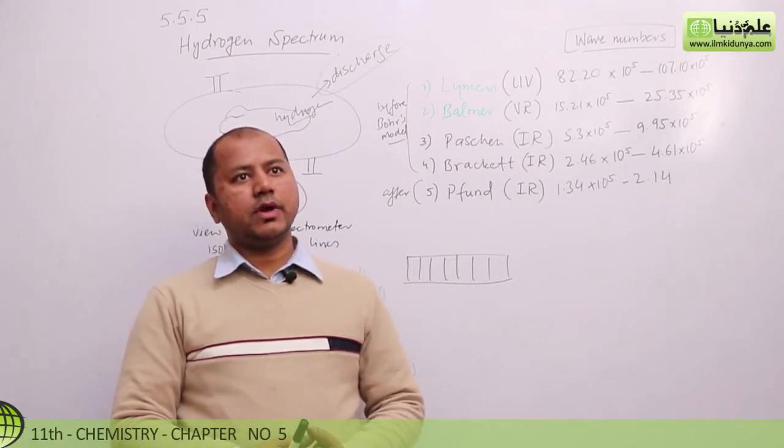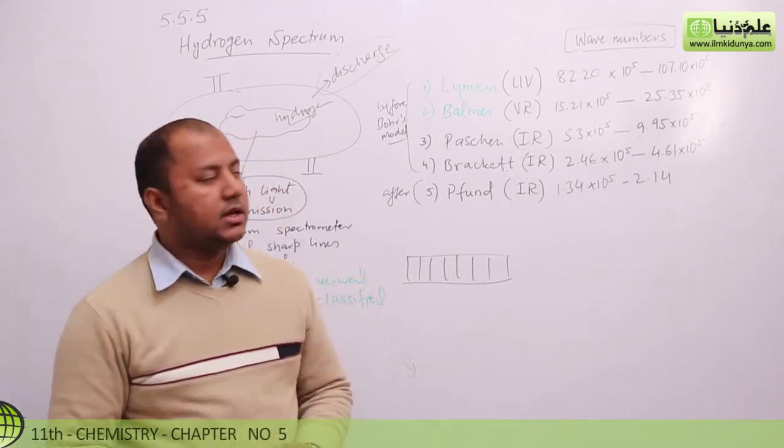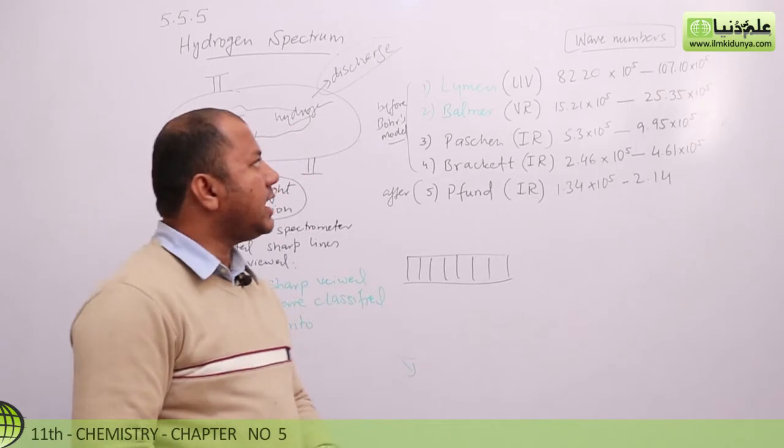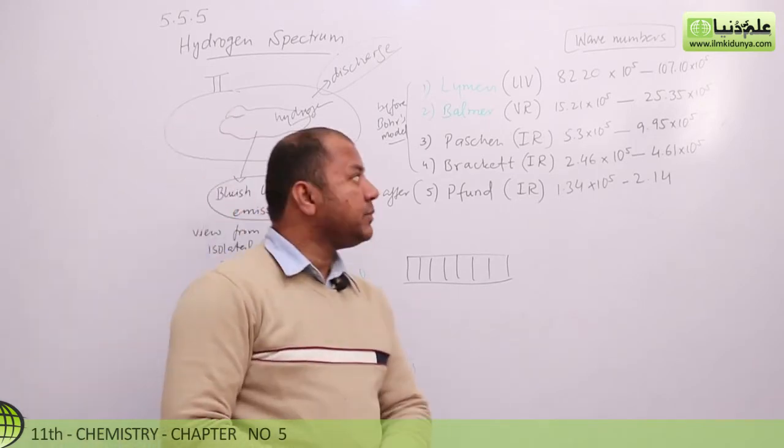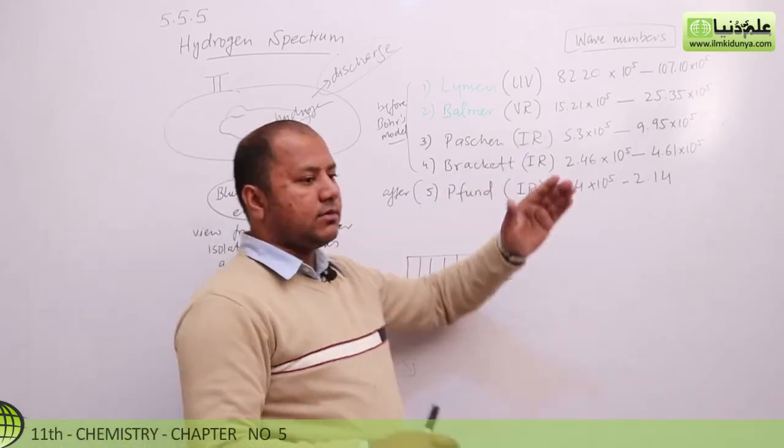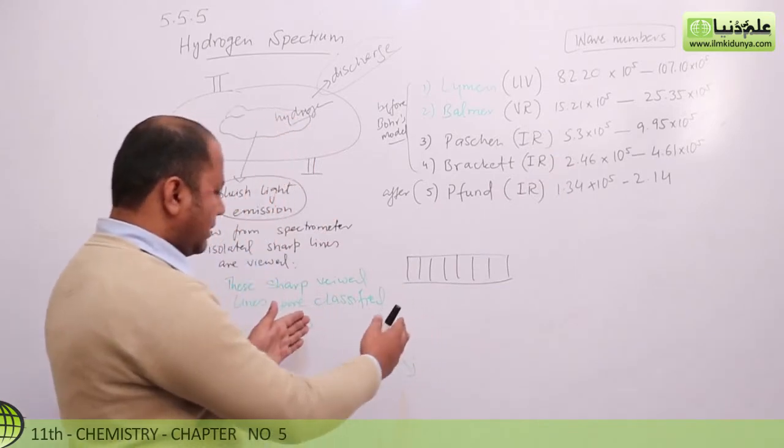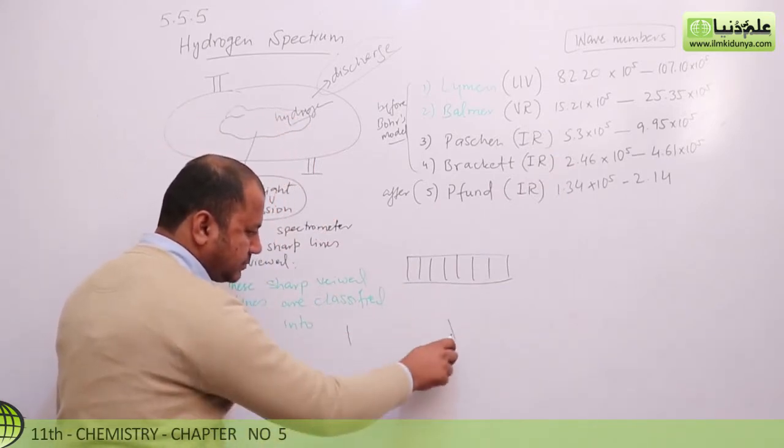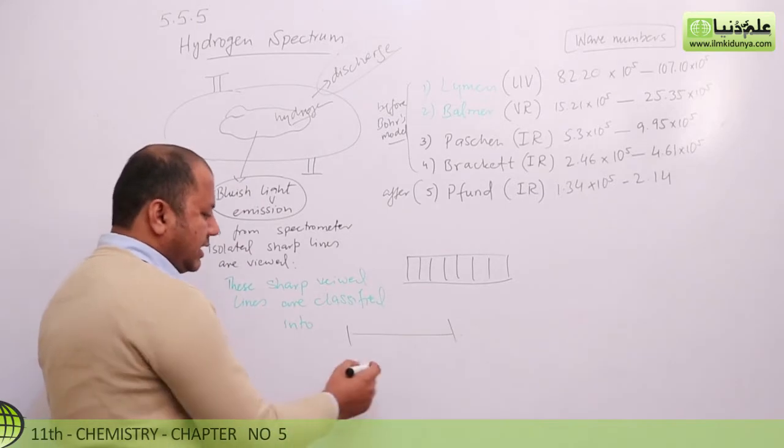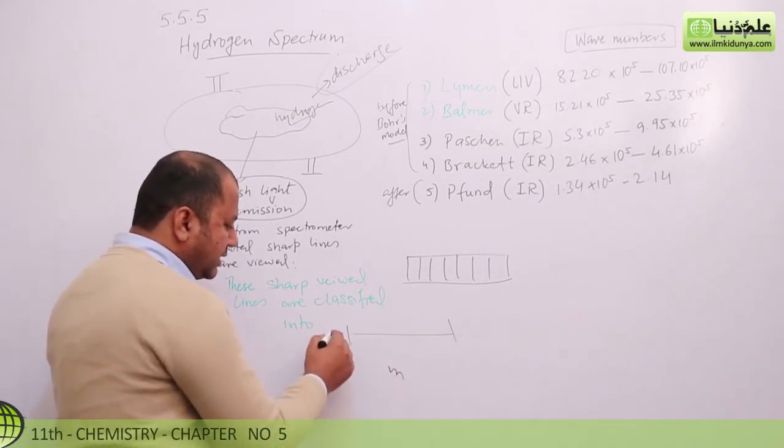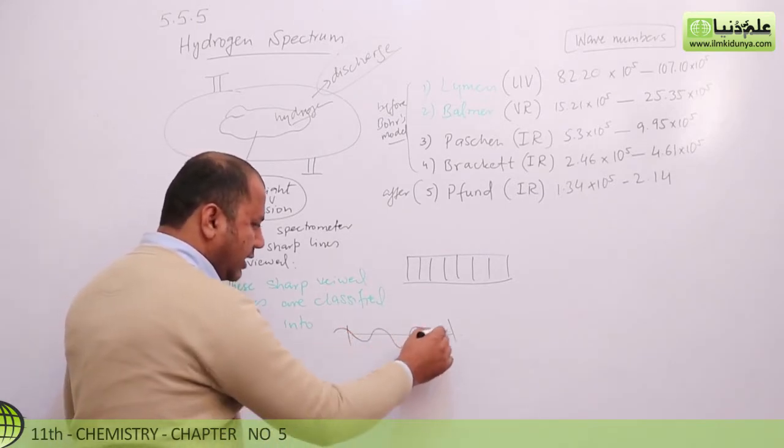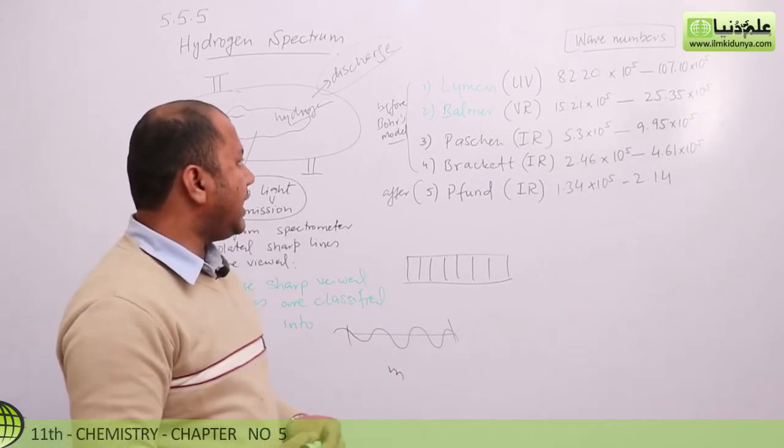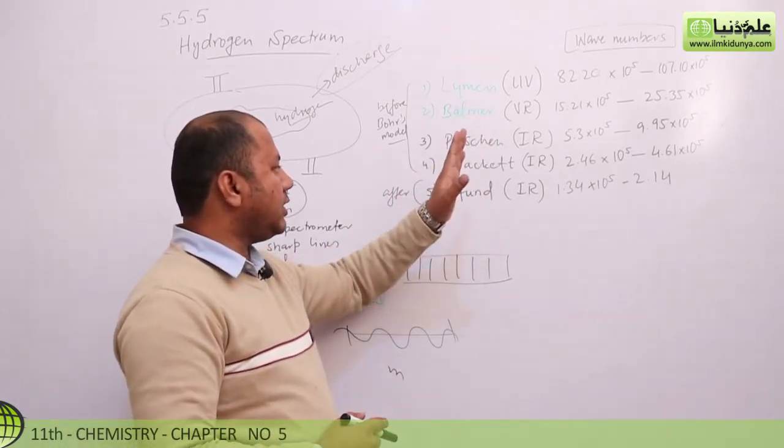It really gives us an idea about different spectral lines. So hydrogen spectral lines study and understand the wave number. Per meter, how many waves are passing? That is the meter. And here is how many waves are passing? This is calculated. Lehman, Balmer, Pastran, and Bracket.